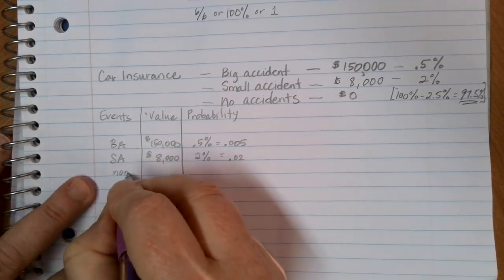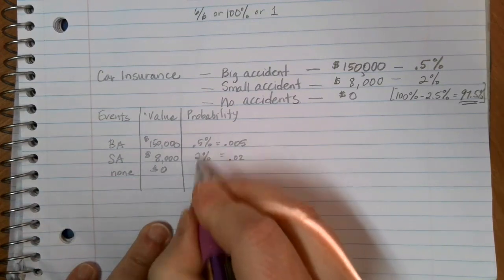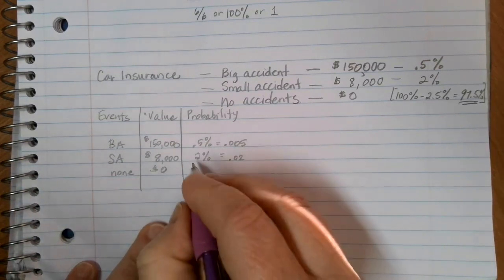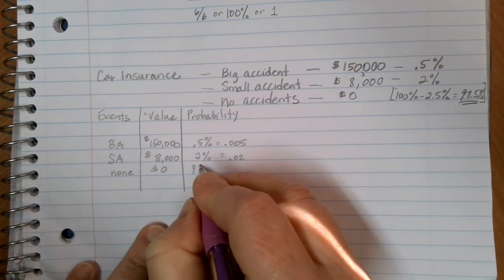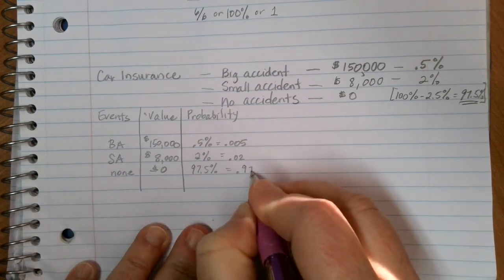And then I have no accidents with a value outlay of zero dollars. And then it's everybody else. So that ends up being 97.5% or 0.975.